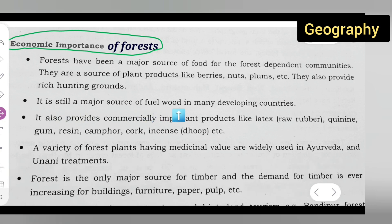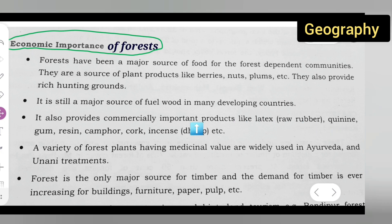The second point is that forests are still a major source of fuel wood in many developing countries. It also provides commercially important products like latex, raw rubber, quinine, gum, resin, and other forest-based commodities.